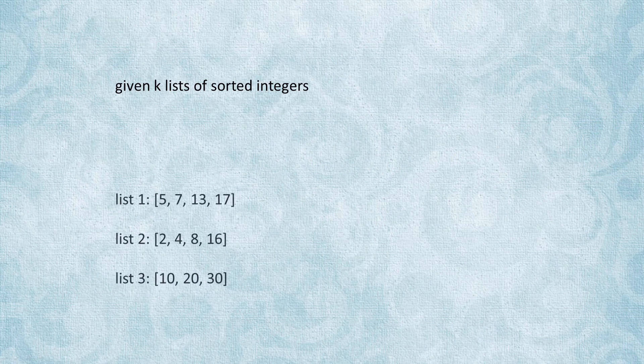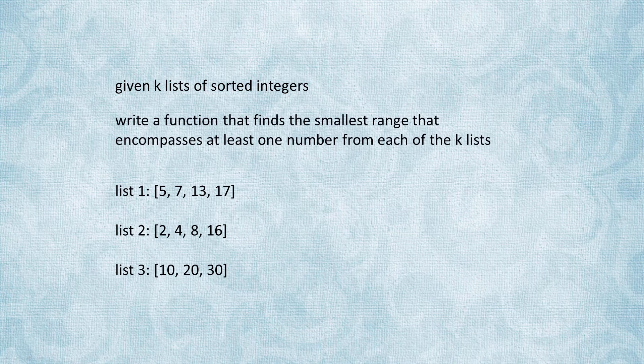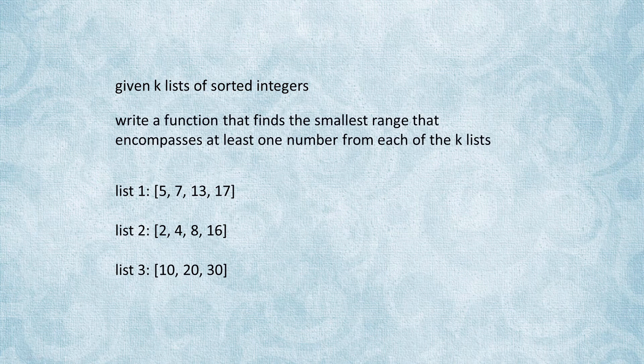Restating this in more dry terms, you have k lists of sorted integers. Write a function that finds the smallest range that encompasses at least one number from each of the k lists.